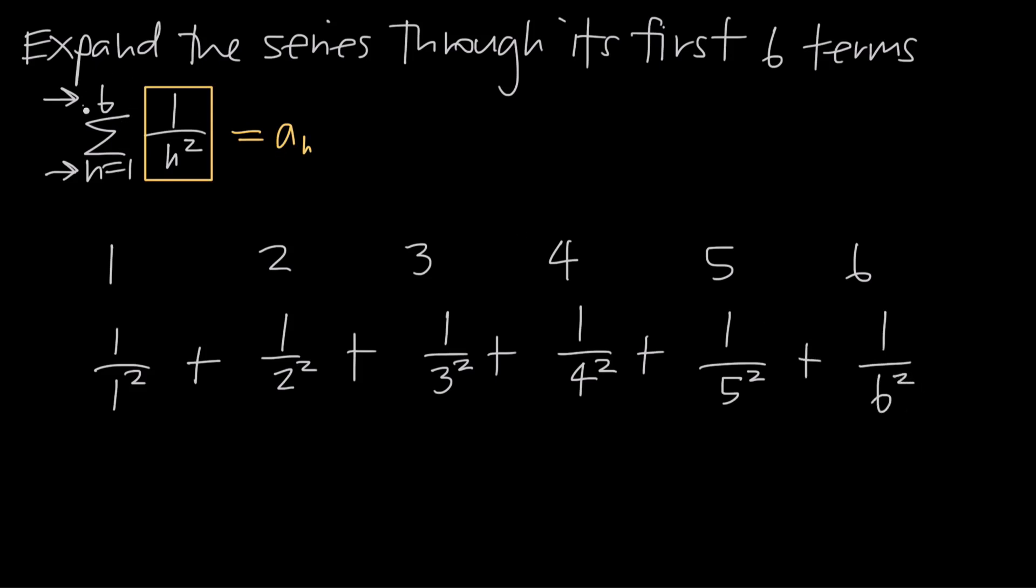And we stop there because this value right here of 6 tells us stop when you get to n equals 6. In other words, your last term will be the term where you plug in n equals 6, which is the term that we just found here. So that's where we're going to stop.